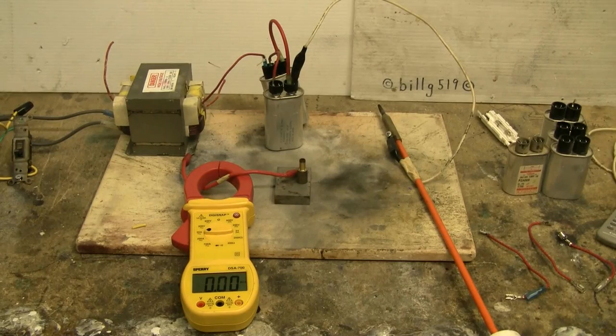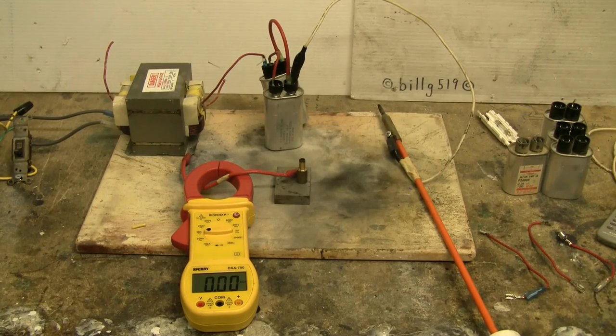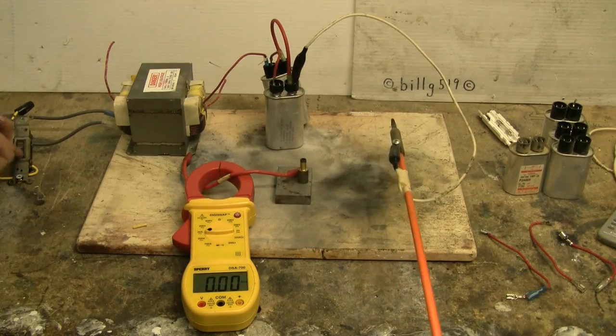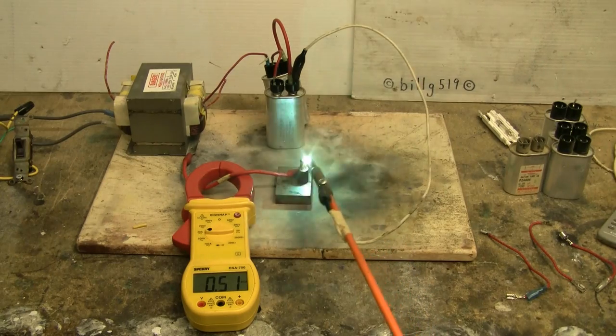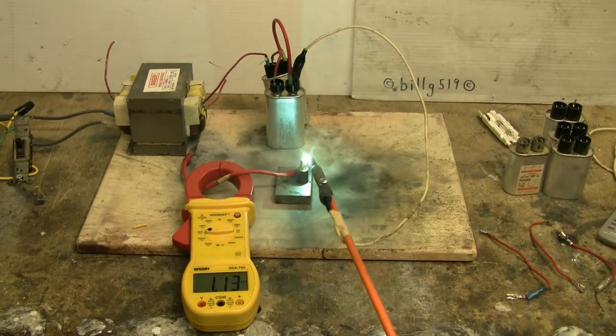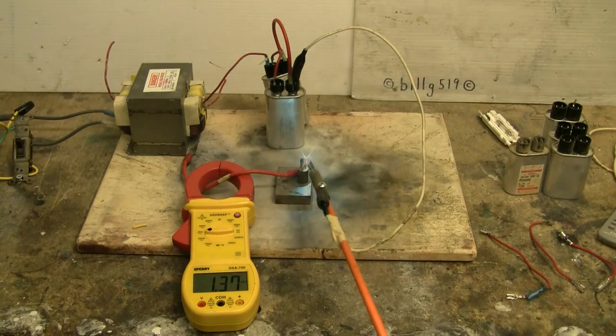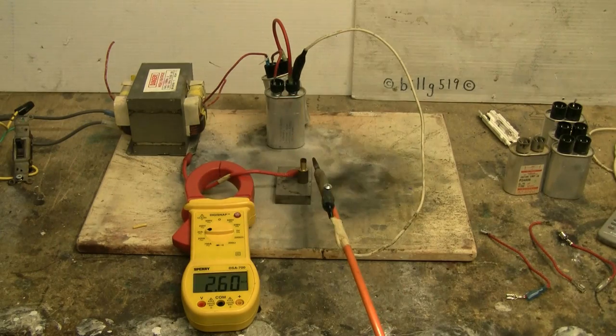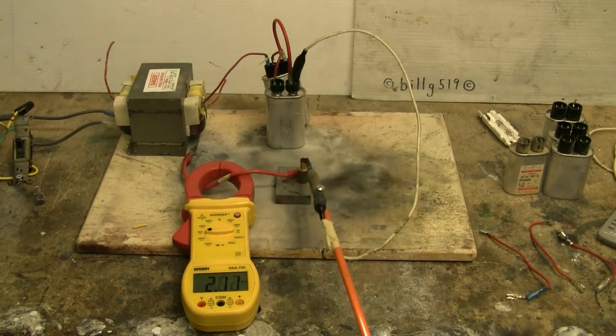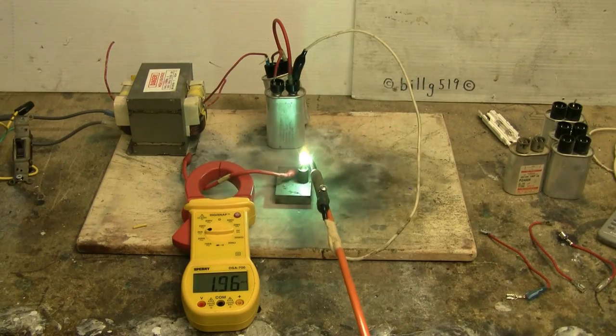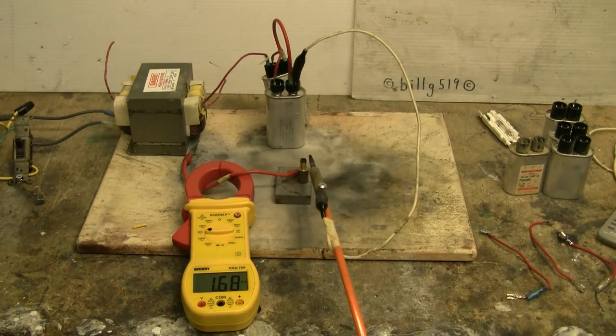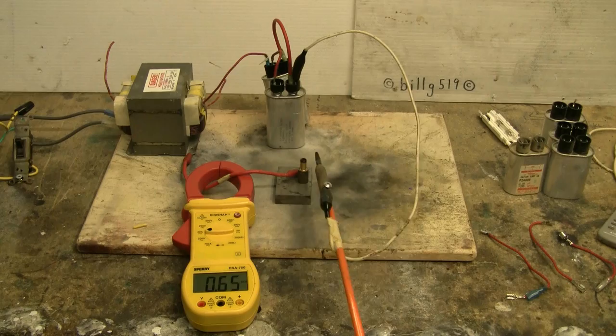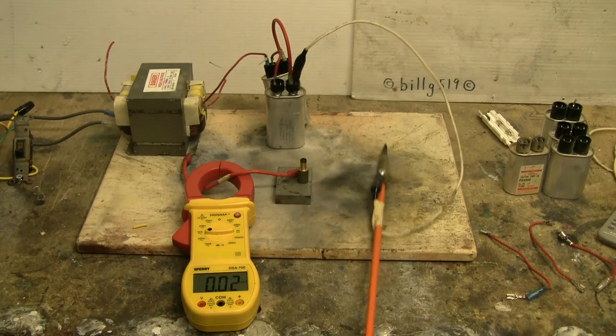Now I've placed a second capacitor in parallel with the first one. Let's give this a try. The arc is a little better but still very restricted. And the current is maybe 1.6 amps or so.